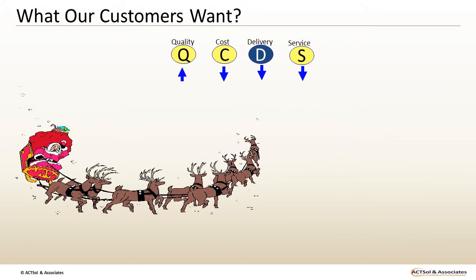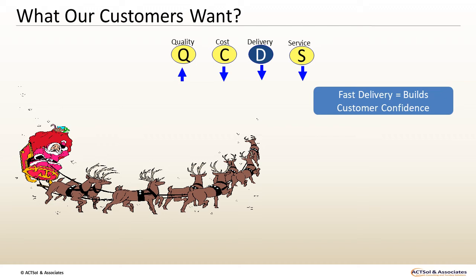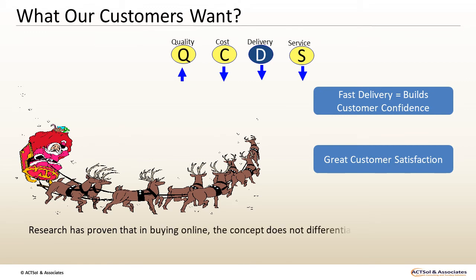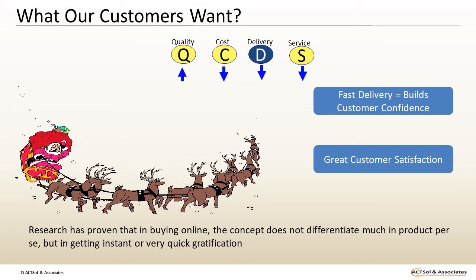The third attribute is Delivery. By the term delivery, we mean the delivery of the product or service within the expected timelines. Fast delivery has become a critical factor in building confidence. Fast deliveries create a basis for repeat purchases and greater customer satisfaction. There must also be a fine balance between inventories, logistics costs, and the profit gained from adding fast delivery. Research has proven that in buying online, customers do not differentiate much on the product itself, but on getting instant or very quick gratification — and hence delivery is an important factor.